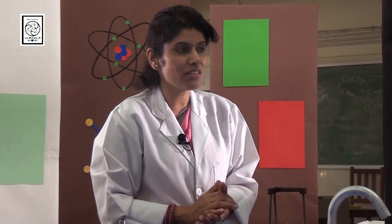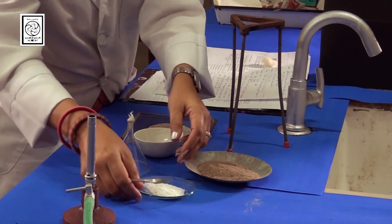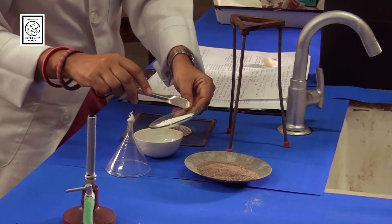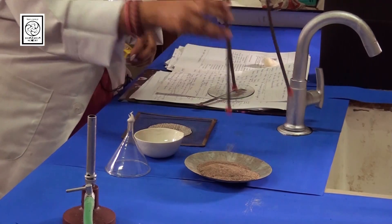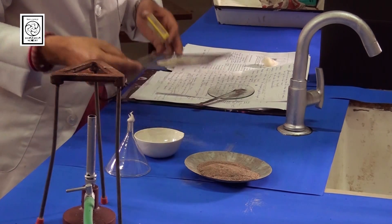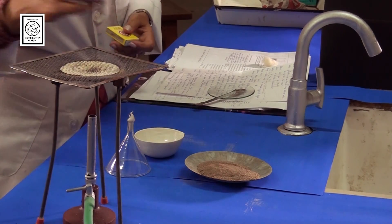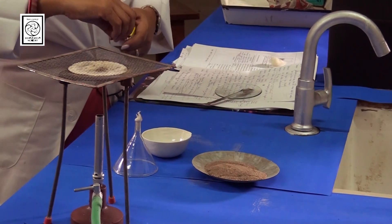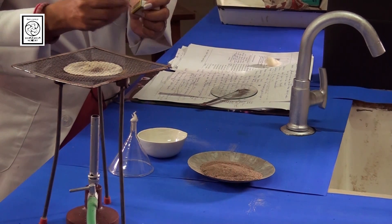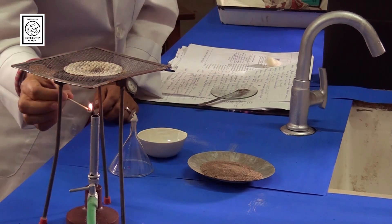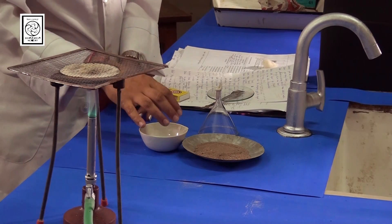So, let us begin the process. First of all, we will place the impure sample of naphthalene into the china dish with the help of a spatula. Then, we will place the tripod stand and a wire gauze over it. Now, we are going to light up the burner. Now, we are going to heat this impure sample of naphthalene over a sand bath with a funnel placed on the china dish.